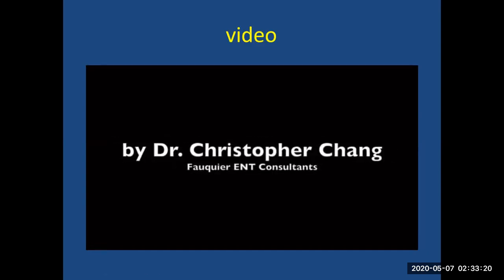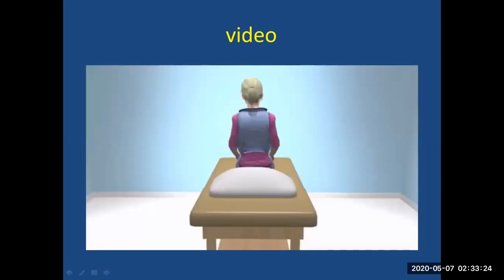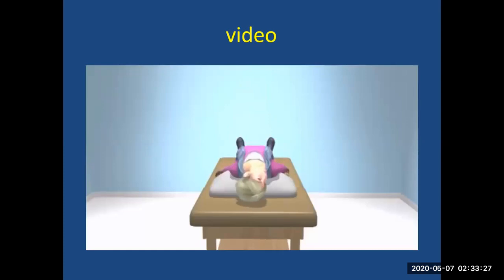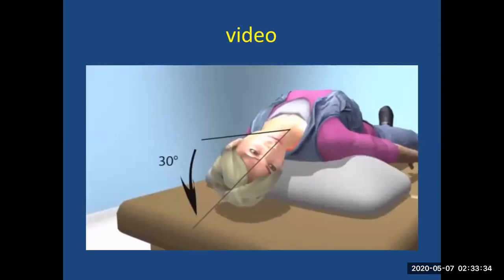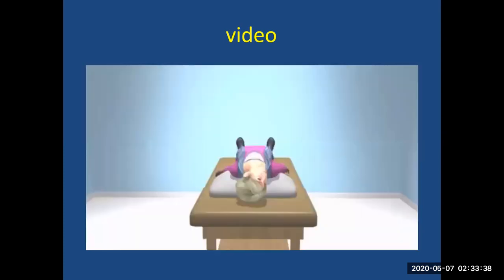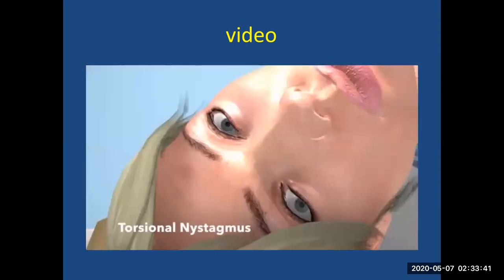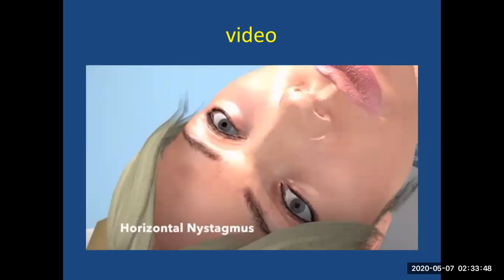This video demonstrates the Dix-Hallpike maneuver and the corrective Epley maneuver. The Dix-Hallpike maneuver is performed whenever BPPV is suspected as causing a patient's dizziness. The head is turned 45 degrees and the body laid back so the head is extended about 20 to 30 degrees. If BPPV is present, eye twitching called nystagmus will occur. Torsional nystagmus refers to rotating eye twitching, while side-to-side eye twitching is called horizontal nystagmus.